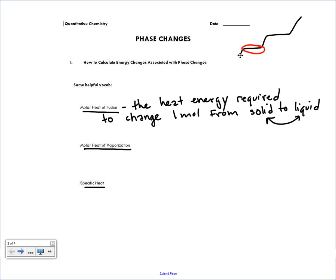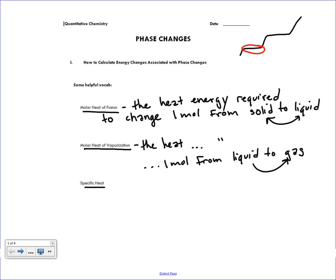The molar heat of vaporization has an almost identical definition — it's the heat energy required to change one mole of anything from a liquid to a gas. Like before, the value is given for liquid to gas. If you want to know what it is going the other way, you just reverse the sign. But usually we'll be talking about heating things up, going from liquid to gas.